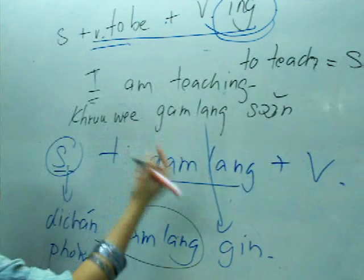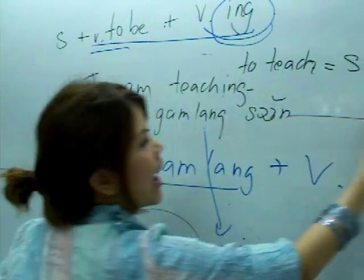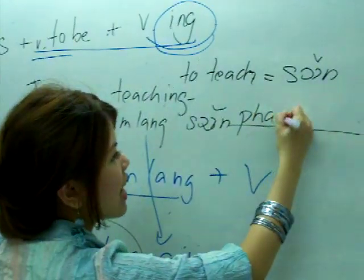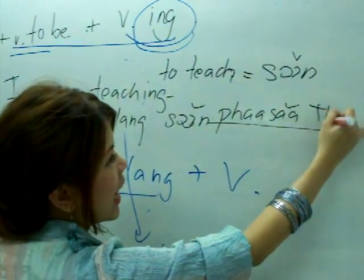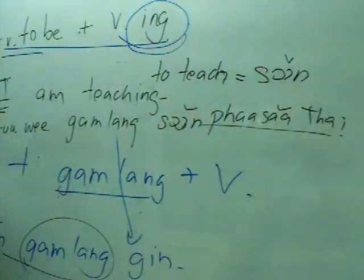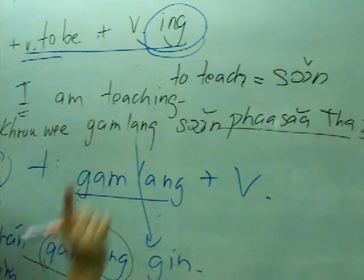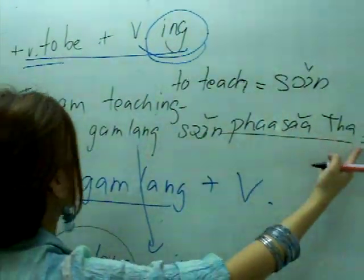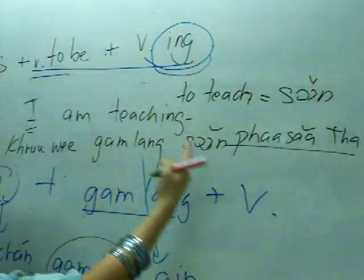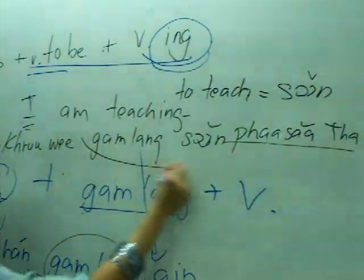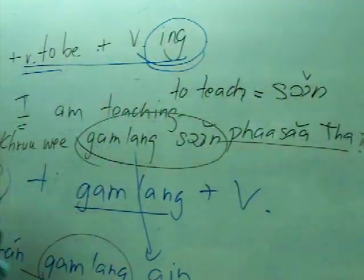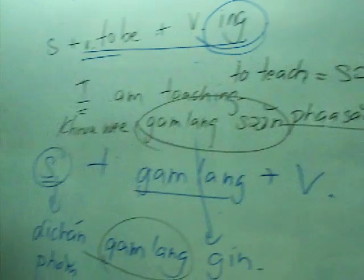ครู กำลัง สอน — the teacher is teaching Thai language. ภาษา (pasa) means language, and ภาษาไทย (pasa Thai) means Thai language. So the full sentence is: ครู กำลัง สอน ภาษาไทย — the teacher is teaching Thai language.